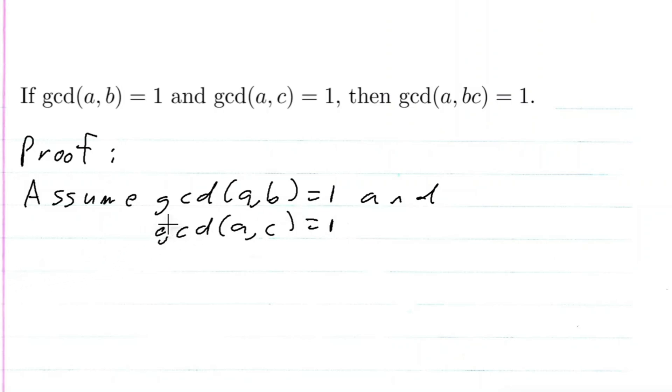So in the book, there's a theorem that's labeled 2.3 that states, let me go ahead and write this. So it states that if we have the GCD of A and B, we can always write that as a linear combination. So we have the GCD of A and B is equal to one. So this implies that AX plus BY is equal to one, where X and Y are just integers.